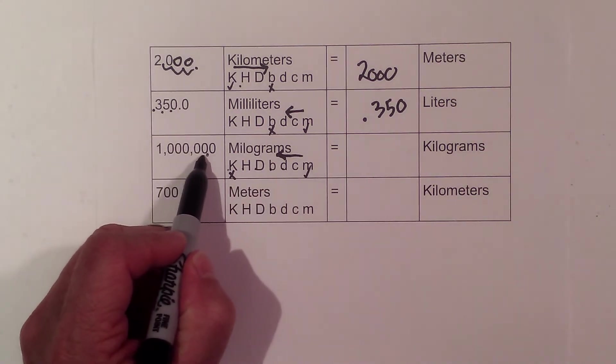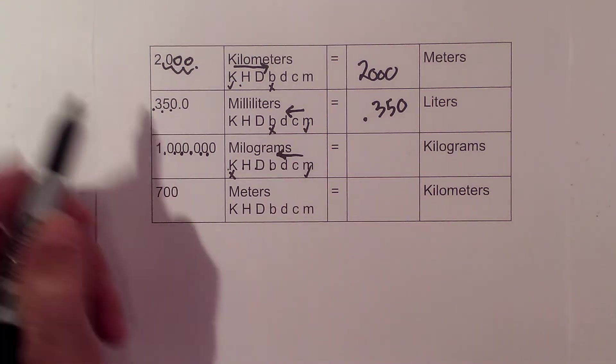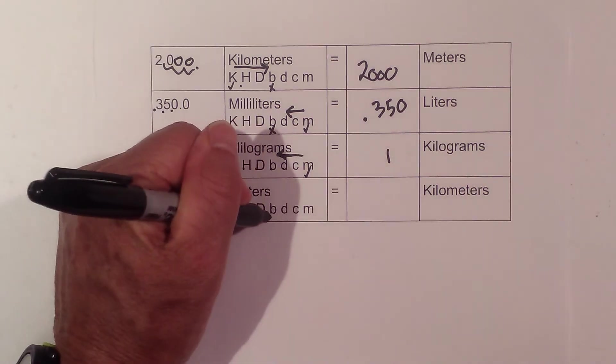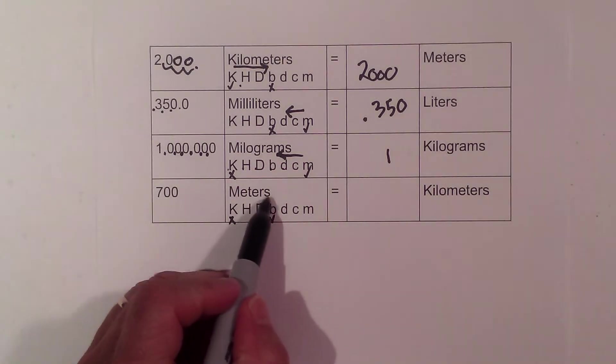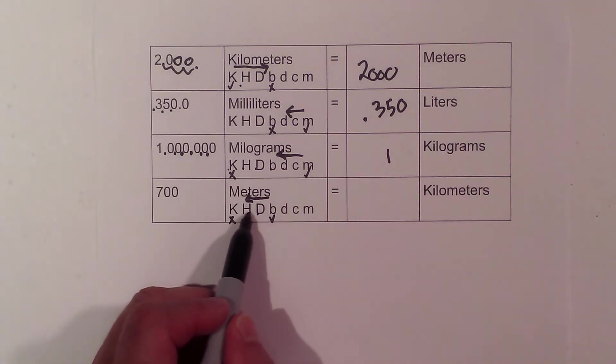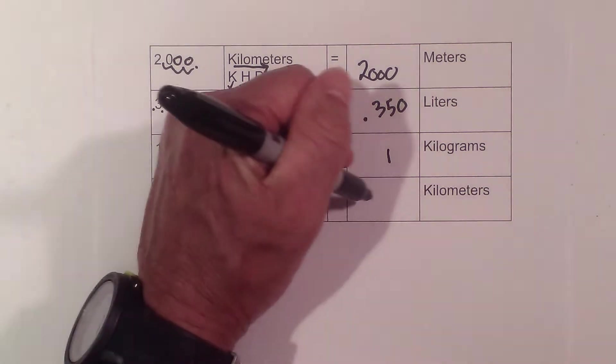And the last one: 700 meters equals how many kilometers? Start at meters, which is a base. I'm going to kilometers. I go from the check to the X in that direction. I'm going to count one, two, three, so I go one, two, three. So it is 0.700, or you could just write 0.7 kilometers.